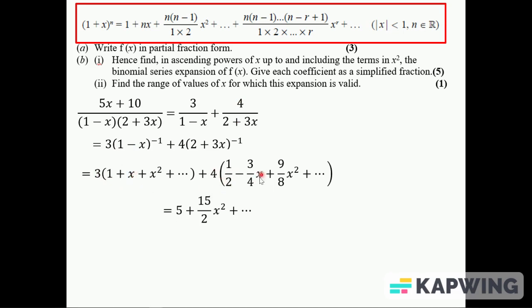The x terms, actually I don't get any because I've got 3x here and I've got minus 3x here as well. This is 9/2 of x, I'm going to do 4 times 9/8, and this is 6/2 of x squared rather, giving me 15/2.